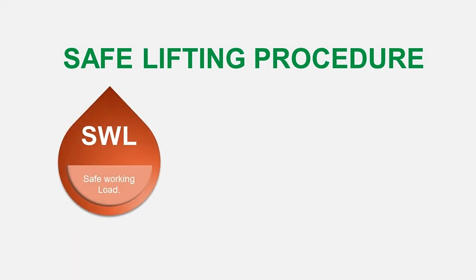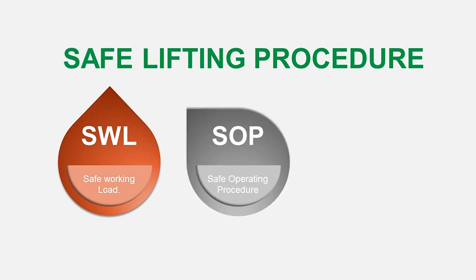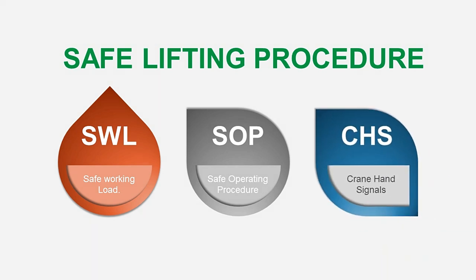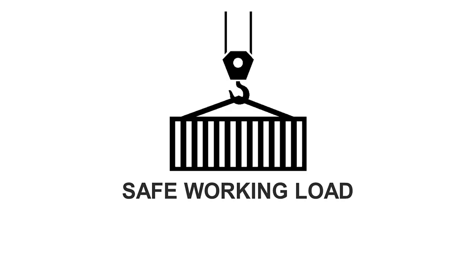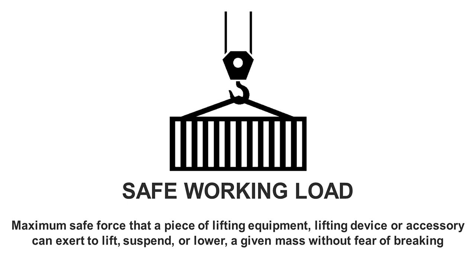The safe lifting procedure includes three main parts: first, safe working load; second, safe operating procedure; and third, crane hand signals. The safe working load is the maximum safe force that a piece of lifting equipment, lifting device, or accessory can exert to lift, suspend, or lower a given mass without fear of breaking.